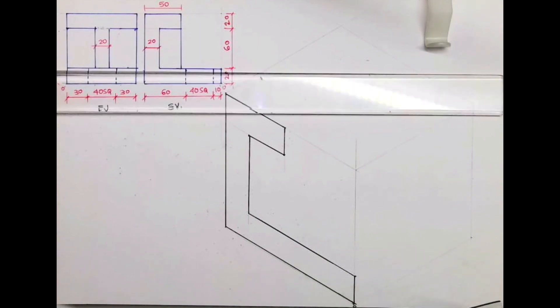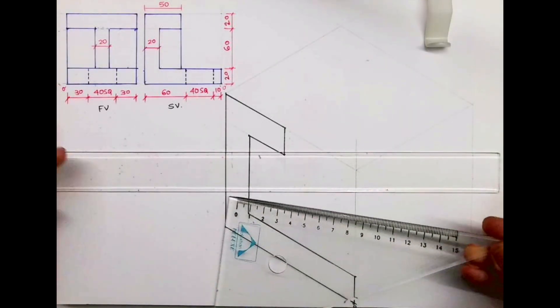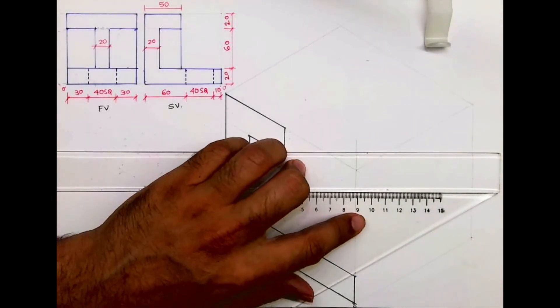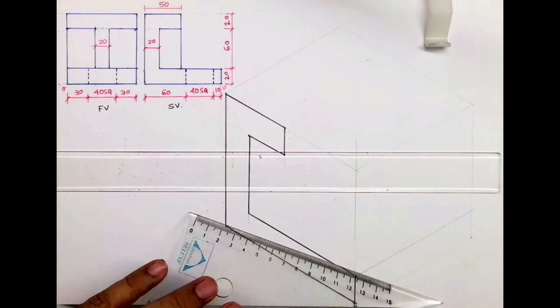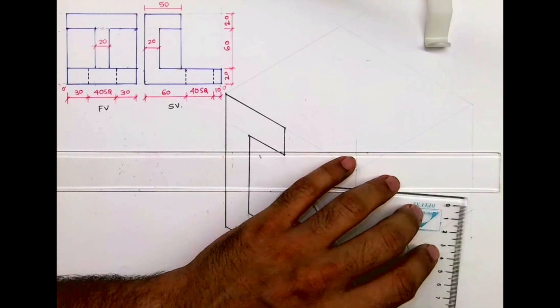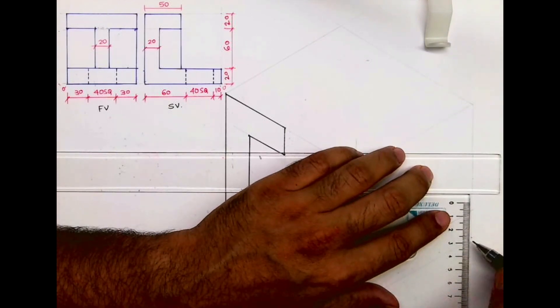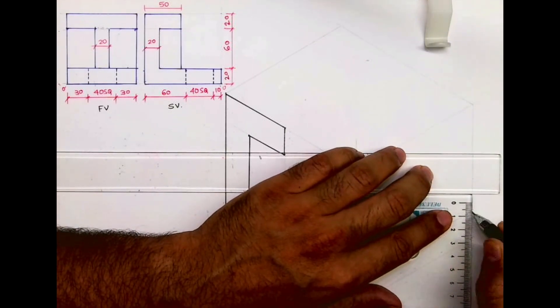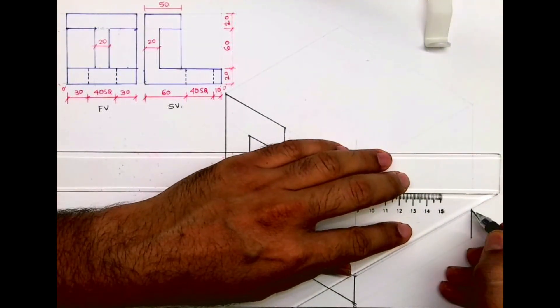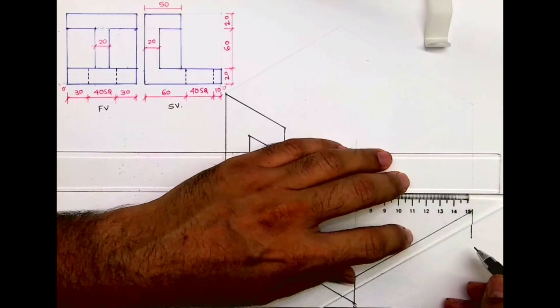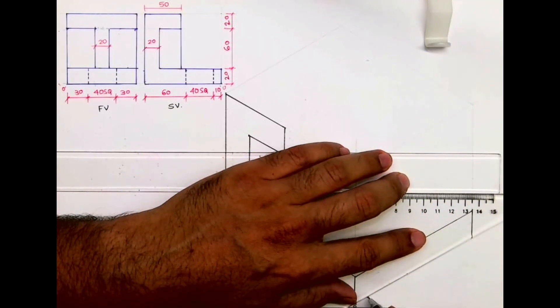Now after drawing this, you will take this line inside. How much it will go inside? 100. And this height is 20. You will draw a line like this.